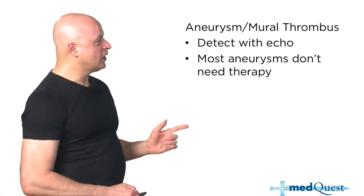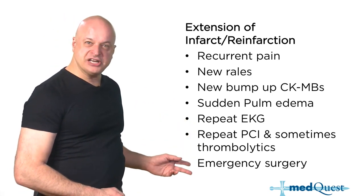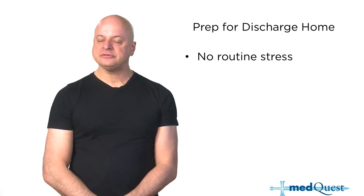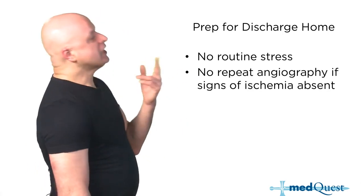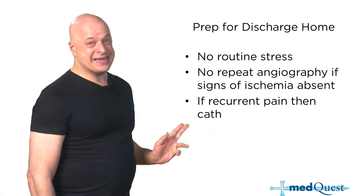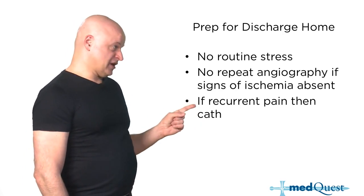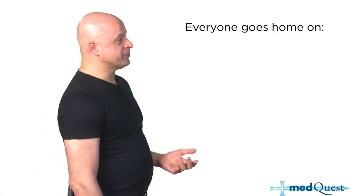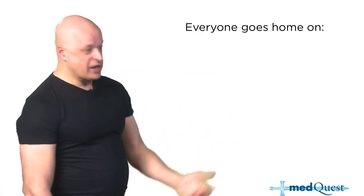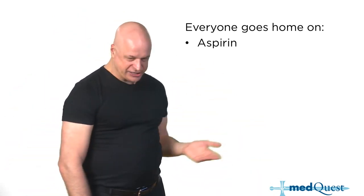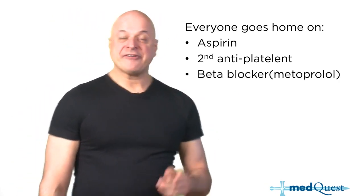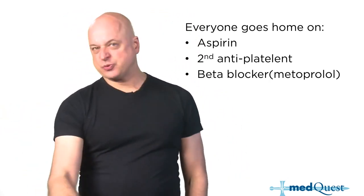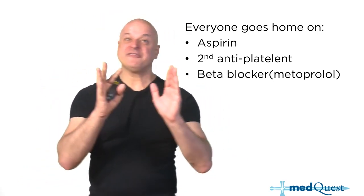For extensions and reinfarctions — get in there and open that vessel because only more perfusion will fix you. If you're not reinfarcting, there's no reason to go back. Recurrent pain means get an EKG, more enzymes, cath them, and balloon it open. Post-MI medications: aspirin, beta blocker, statin, and two antiplatelet drugs for a while.